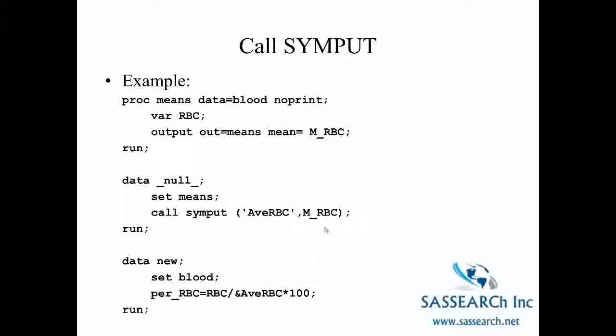We now have a global macro variable that we can use in a different data step. The reason we can't use a percent let statement to create this macro variable is we actually don't know the value of M underscore RBC. We haven't looked at any output. So call SYMPUT allows us to transfer values between the data steps without actually having looked at the output ourselves.